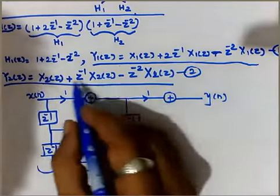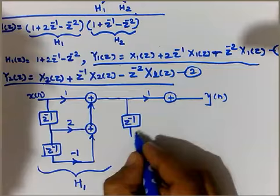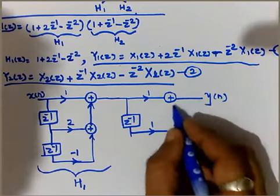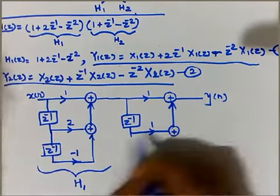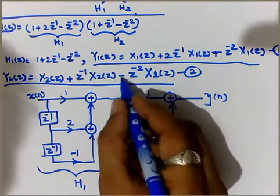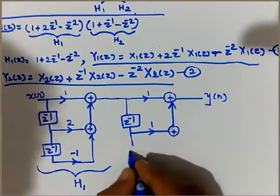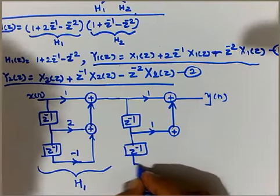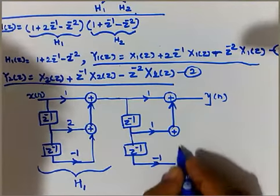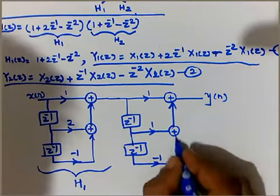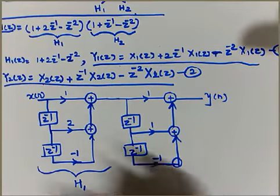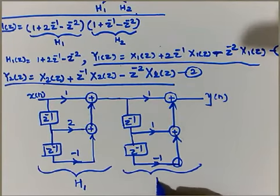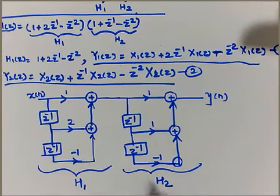This is nothing but z^-1, it is scaled by 1, so it will be obviously 1 over here. Next it is scaled by -1, so the z^-1 block which is written in the next step has to be scaled by -1. Sorry, this is not required, so directly it is summed up.